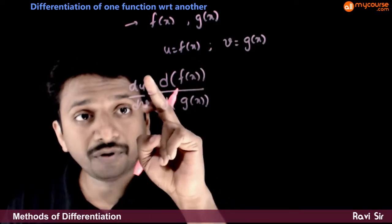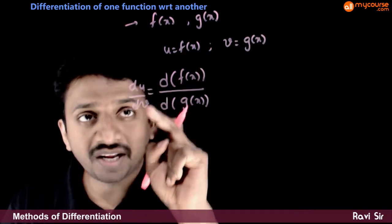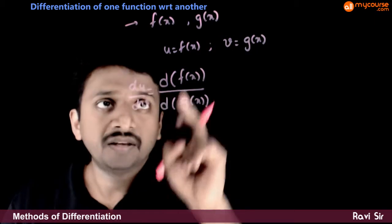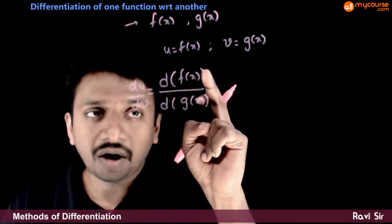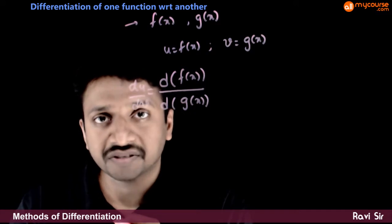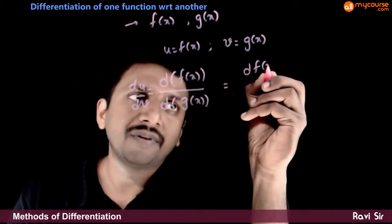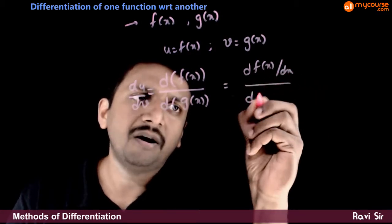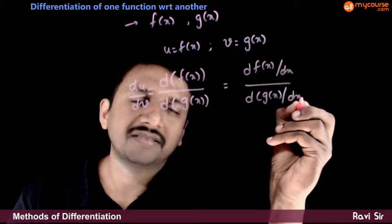This is differentiation of u with respect to v. So du by dv is differentiation of u with respect to v. If u is f of x and v is g of x, then d of f of x by d of g of x is nothing but d of f of x by dx divided by d of g of x by dx — dividing both numerator and denominator by dx.